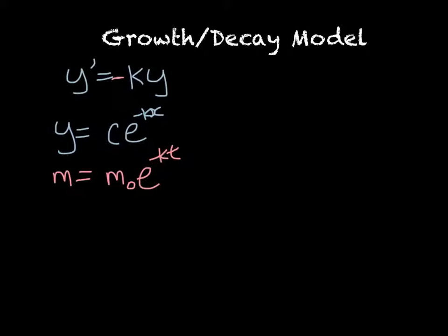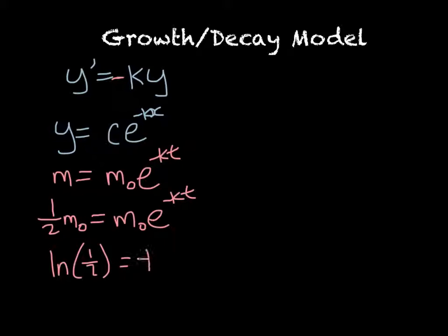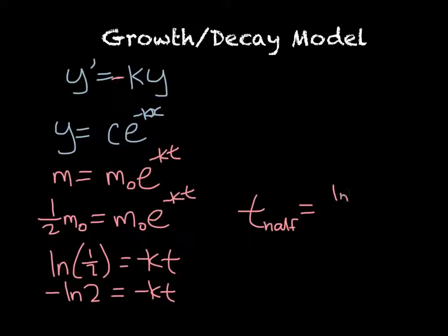And with decay, instead of talking about the time it takes to double, we often talk about a half-life. So if we wanted to find that, then we could plug in one-half times our initial mass. And solving, we would get that ln of one-half is equal to negative k times t. The ln of one-half is equal to the negative ln of 2. And so we have that the t half-life is equal to ln of 2 over k.